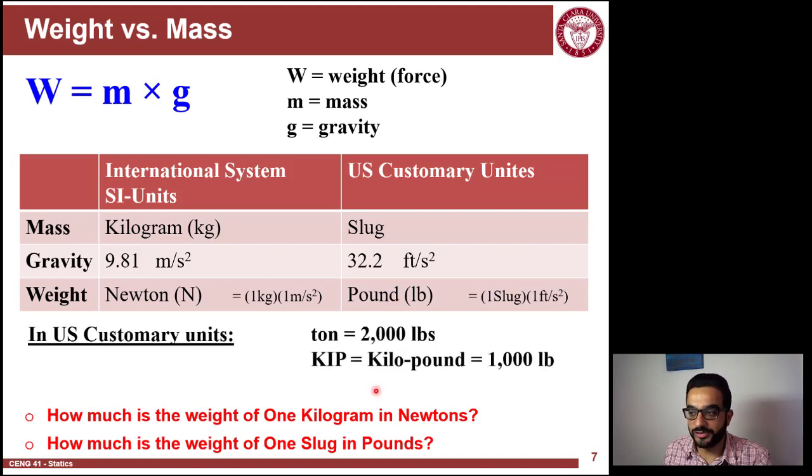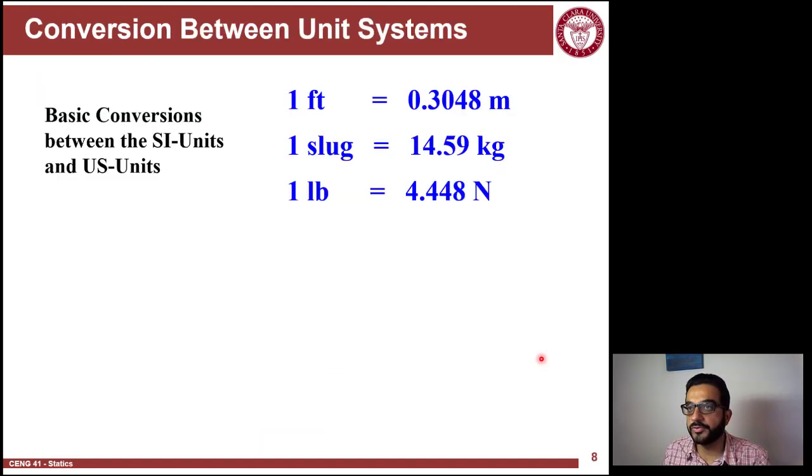Some adjustments of units: a ton in the U.S. system is 2,000 pounds, but a ton in the international system is 1,000 kilograms. There's also the abbreviation kip, which means kilo-pounds, so it's 1,000 pounds. You can convert units between the two systems. You don't have to memorize these - there are many resources you can use - but be aware of the conversions and know how to use them.